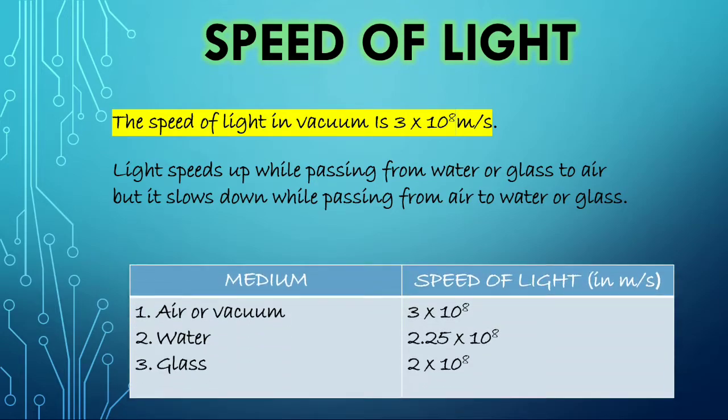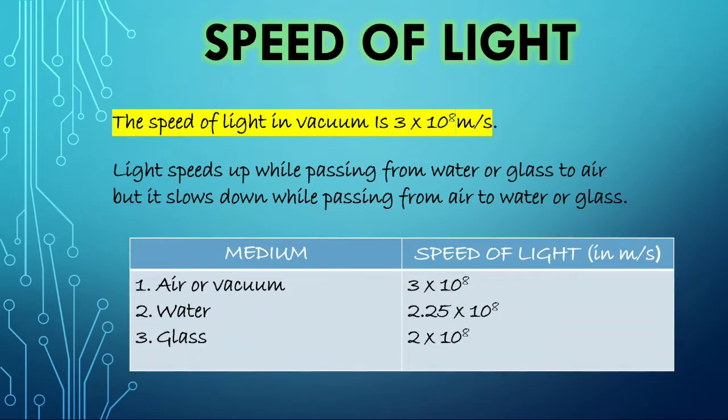Light can travel through air or vacuum. The distance covered by light is nearly 3 x 10 raised to the power 8 meters in one second. Thus, the speed of light in air or vacuum is 3 x 10 raised to the power 8 meters per second approximately. Whenever light travels from one medium to another such as glass or water, the speed of light slows down. The speed of light in water is 2.25 x 10 raised to the power 8 meters per second and in glass it is 2 x 10 raised to the power 8 meters per second. So you can see the speed of light is maximum in air. Thus, when the light travels from water to air or from glass to air, that means the speed of light is increasing. But if it travels from air to water or air to glass, then the speed of light decreases.